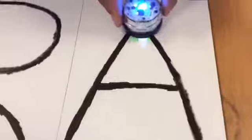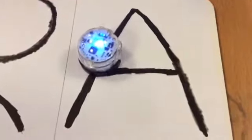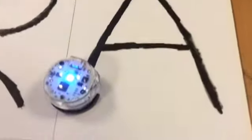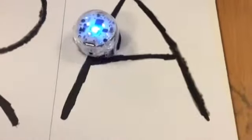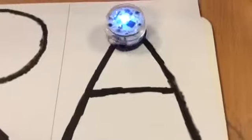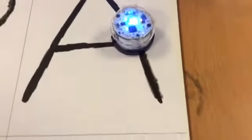So let's try that A. Can we try the A, Ria? And we'll see if that works. So at the moment when it gets to the end of a line it stops, but we're going to try and show people how to make it turn around 180 degrees.